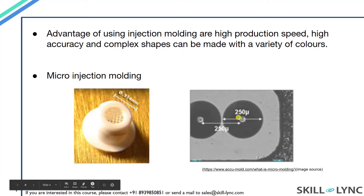One of the latest technologies introduced in injection molding is micro injection molding. If you need to manufacture parts in micro tolerances, this method can be used. Here in this image we can see that the hole size required was 250 microns. For making such small features, micro injection molding can be used. These parts may be used for medical applications or high precision mechanical devices like watches.